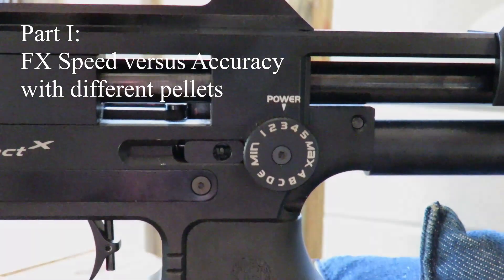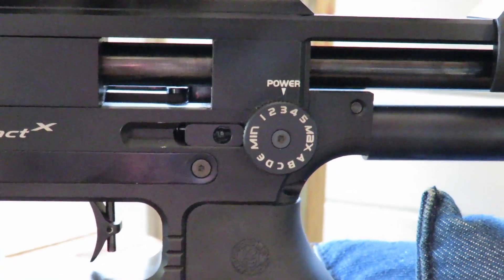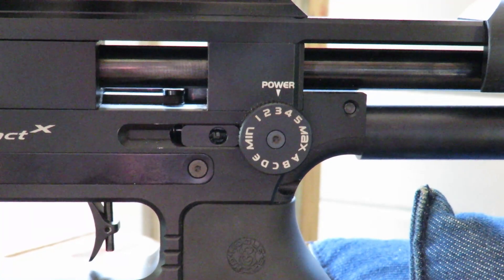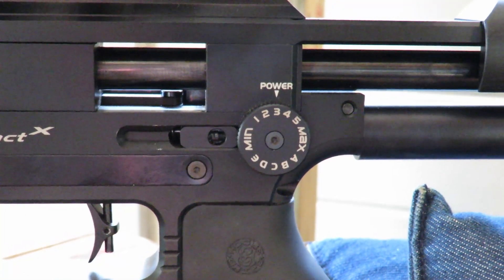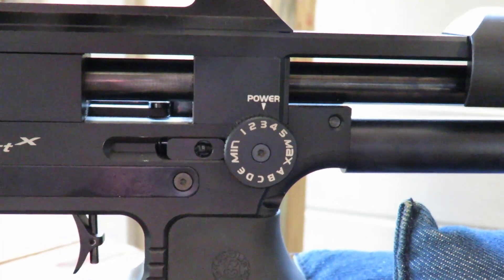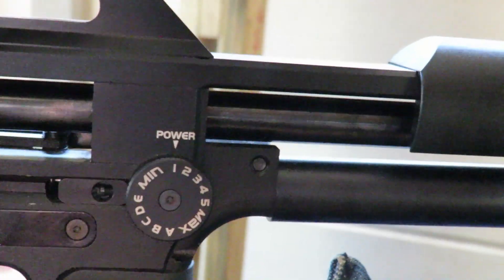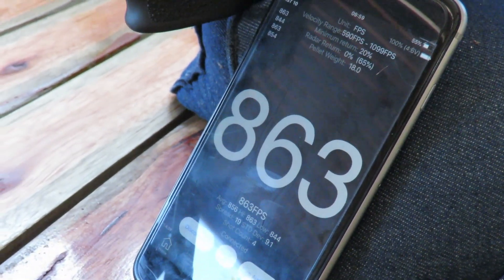Alright, so today's video is going to be all about this little button over here, the power setting. I'm going to be shooting groups of five shots apiece, starting off with the JSB redesigned, and what I'm going to do is dial on each setting, give you guys a speed reading on each of the settings.